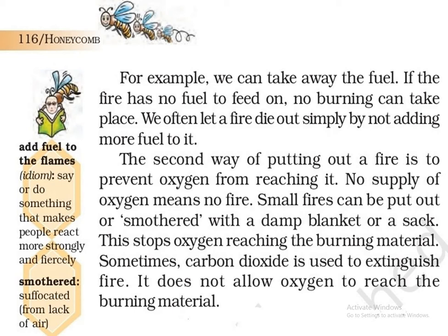Small fires can be put out or smothered with a damp blanket or a sack. छोटी-मोटी आग को उस पर गीला कंबल या बोरी डालकर बुझाया जा सकता है. This stops oxygen reaching the burning material. इससे oxygen जलती चीज तक नहीं पहुंच पाती. Sometimes carbon dioxide is used to extinguish fire. कभी-कभी आग बुझाने के लिए carbon dioxide का प्रयोग किया जाता है. It does not allow oxygen to reach the burning material. यह भी oxygen को जलते हुए पदार्थ तक नहीं पहुंचने देती.